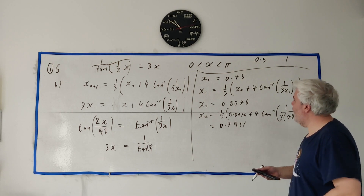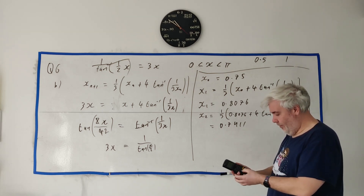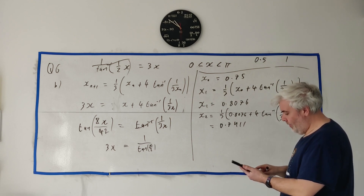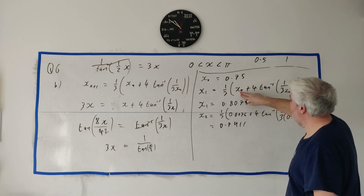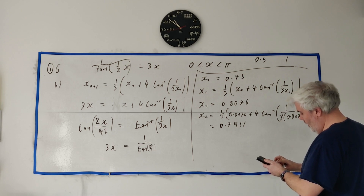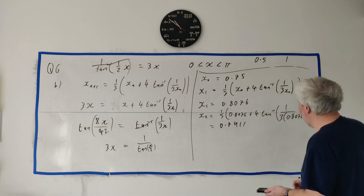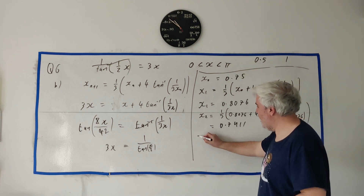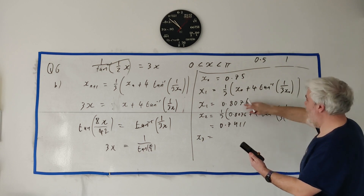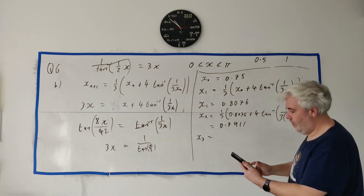The trick is: type your first number (0.75) and press equals so the calculator remembers that as the answer. Then type the whole formula using the ANS button: 1 divided by (3 × ANS + 4) times tan⁻¹(1 over 3 × ANS), making sure all your brackets are right. Now if I press equals, it does the next iteration. Press equals again and it does the next one, and so on. If you don't know how to do this, ask your teacher or search for a video online.